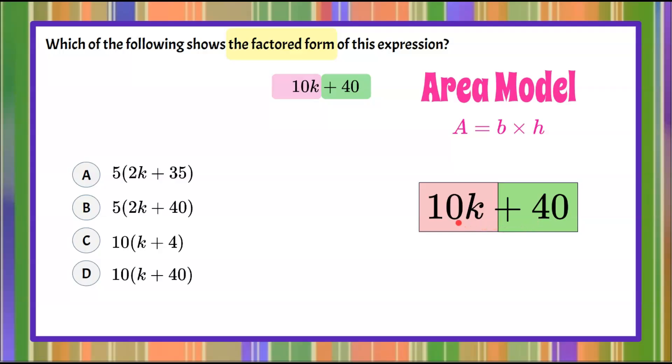I can see that that is 10. Both of these are divisible by 10. Then 10 multiplied by what gives us an area of 10k? So 10 multiplied by k is 10k.